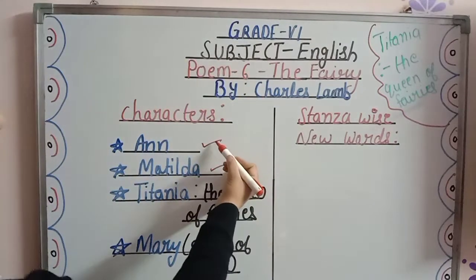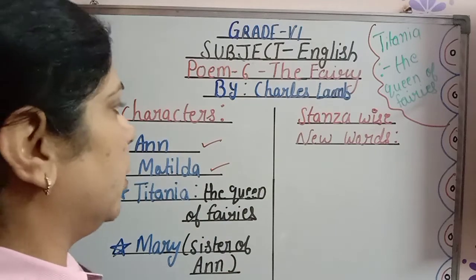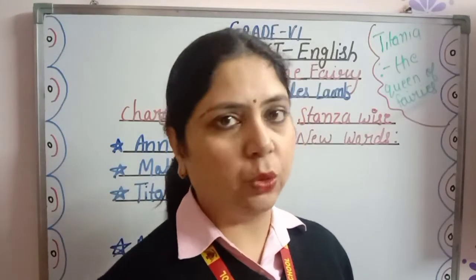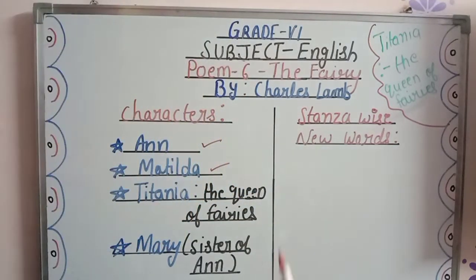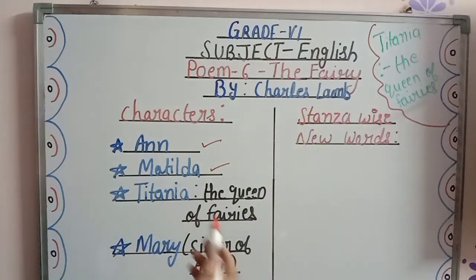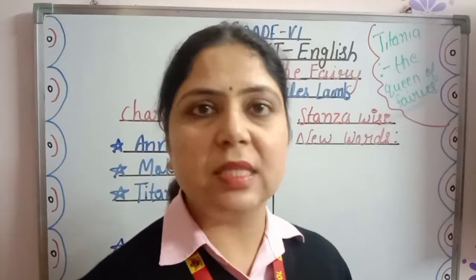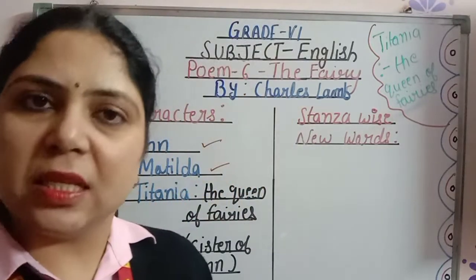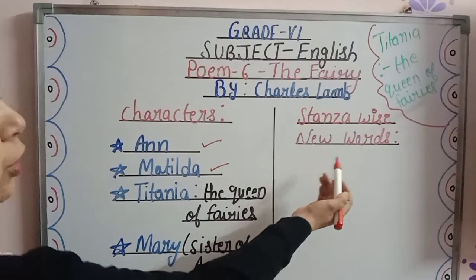This girl Ann is a bit confused. She thinks that whatever they had been reading about the description and beauty of the fairies is really true, or whether the poet Charles Lamb, who had been describing the beauty of the fairies, had himself seen any fairy in his life or not. So we are going to start the stanza-wise explanation along with the new words.